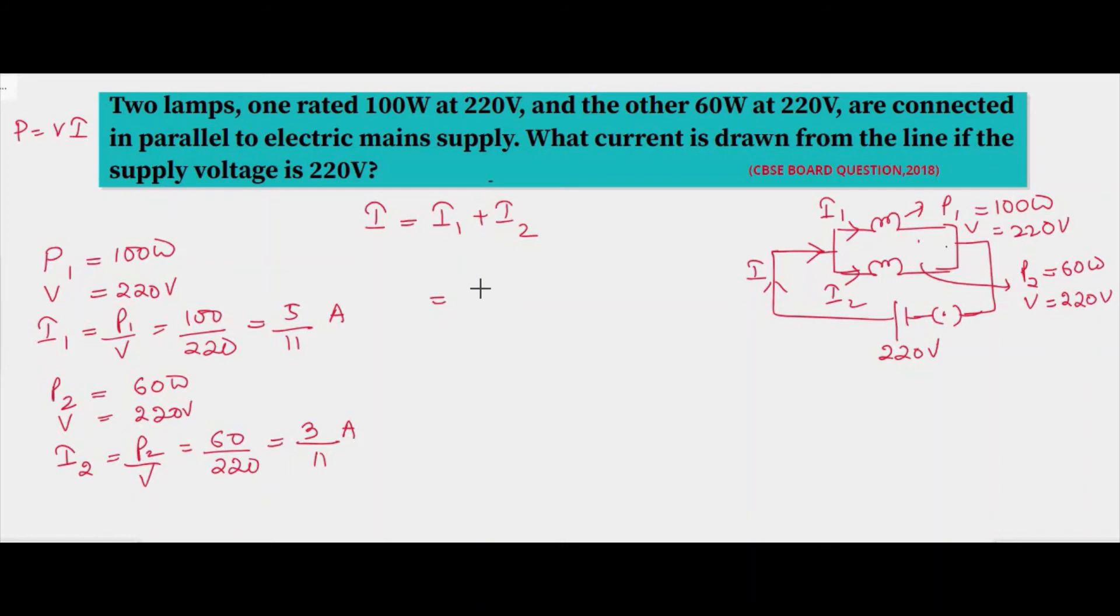So now the total current I will be 5 by 11 plus 3 by 11, which is 8 by 11 ampere. So the total current I will be 0.73 ampere.